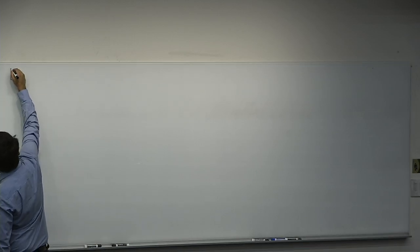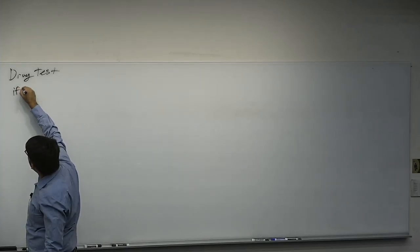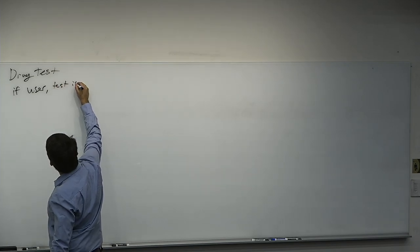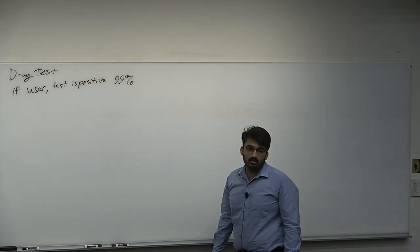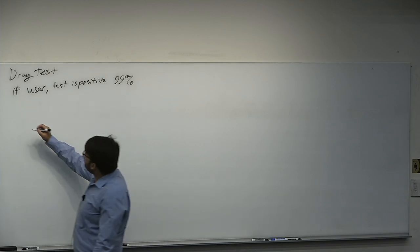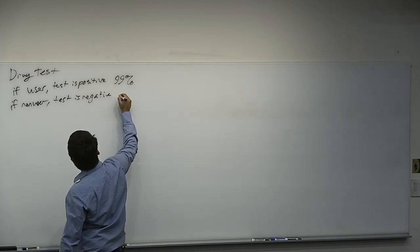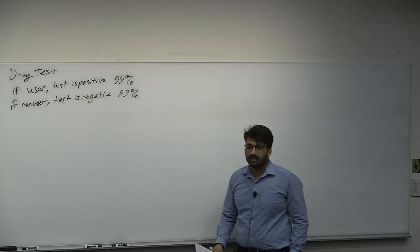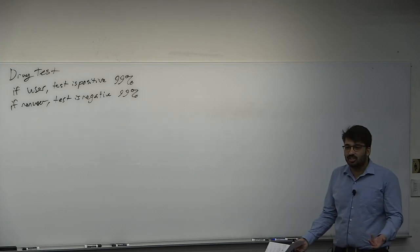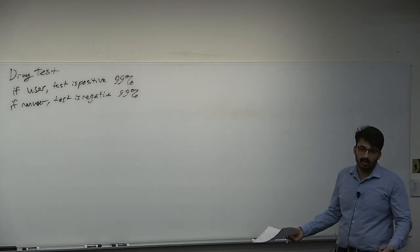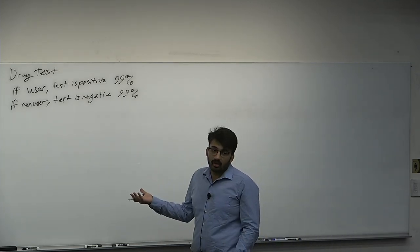Let's do a quick example of Bayes Theorem. Say you have a drug test for illegal narcotics. If someone is a user and the test is positive, the test is 99% accurate — if they actually use the drug, the test will be positive 99% of the time. If they're a non-user, the test is negative 99% of the time. So there's a small chance a non-user tests positive, and a small chance a user tests negative. This is a very accurate test, but there is error on both sides.